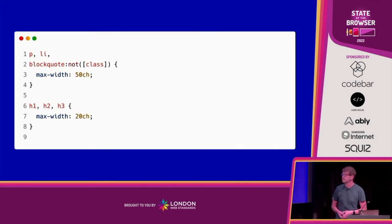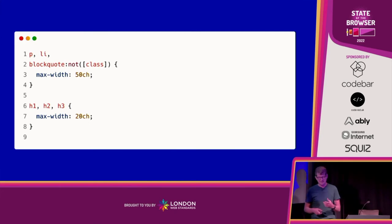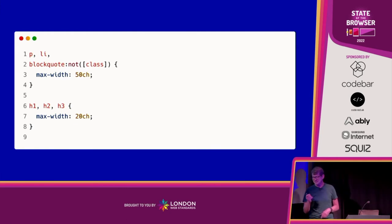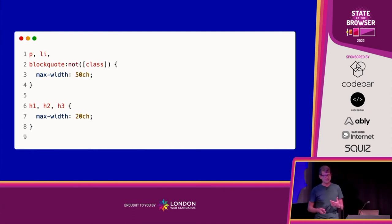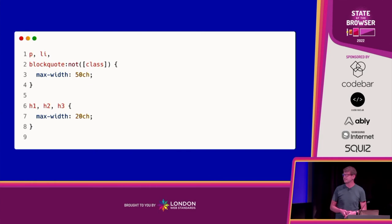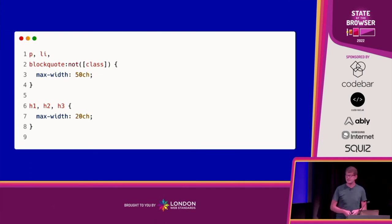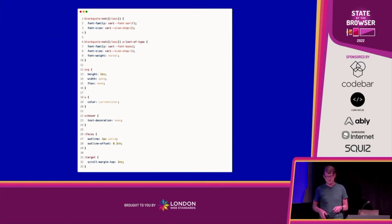You'll notice when you read a book the line length is quite short — it makes reading easier. Because we're using massive typography, we can set the max-width of flow content — paragraphs, lists, blockquotes — to be quite narrow. We're using the `ch` unit, which is the width of a zero character at the rendered font size, making it really useful for setting type like this. For headings I've also reduced the max-width, because larger text needs shorter lines.